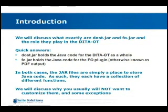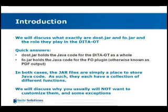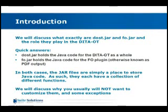We're going to discuss what dost.jar and fo.jar do, what they are, and what role they play in the DITA Open Toolkit. dost.jar is the place that holds the Java code for DITA as a whole, and fo.jar holds the Java code for the FO plugin, otherwise known as the PDF plugin. These days, if you're publishing from DITA to PDF, you're probably using code that's there.